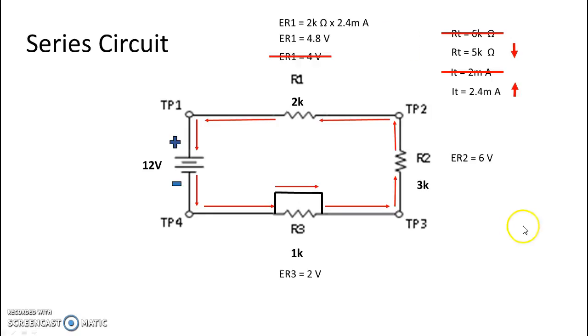Similarly, if we look over on R2, the voltage drop on R2 is also going to go up. So it was 6 volts, but now we take our resistive value of 3k ohms and multiply it by 2.4 milliamps, and we get 7.2 volts.